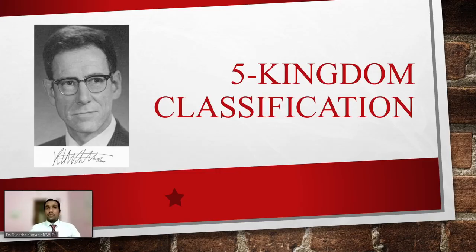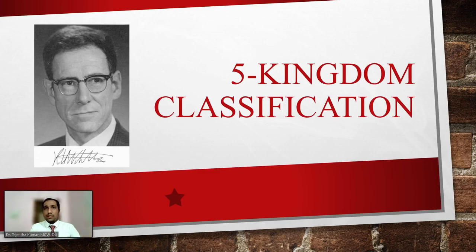Scientists and taxonomists attempted many times to classify and organize living beings in hierarchical order. In 1969, R.H. Whittaker proposed a five-kingdom classification, which is very well known and universally accepted. These kingdoms are Monera, Protista, Fungi, Plantae, and Animalia. The main criteria for this classification include cell structure, body organization, mode of nutrition, reproduction, and phylogenetic relationship.